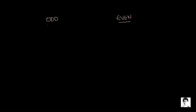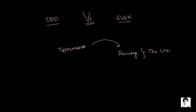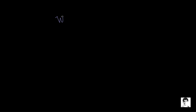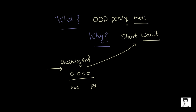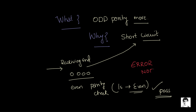We've talked about both odd and even parities, but what is the difference — why do we use one over the other? The working of both is absolutely the same: we add the parity bit at the transmission end and the circuit at the receiving end checks for parity and detects the error. However, odd parity is given more preference. The reason is that if there is a short circuit, the receiving end would receive a binary word of all zeros. An even parity check would find the number of ones still even, so no error is detected. Hence odd parity is preferred.